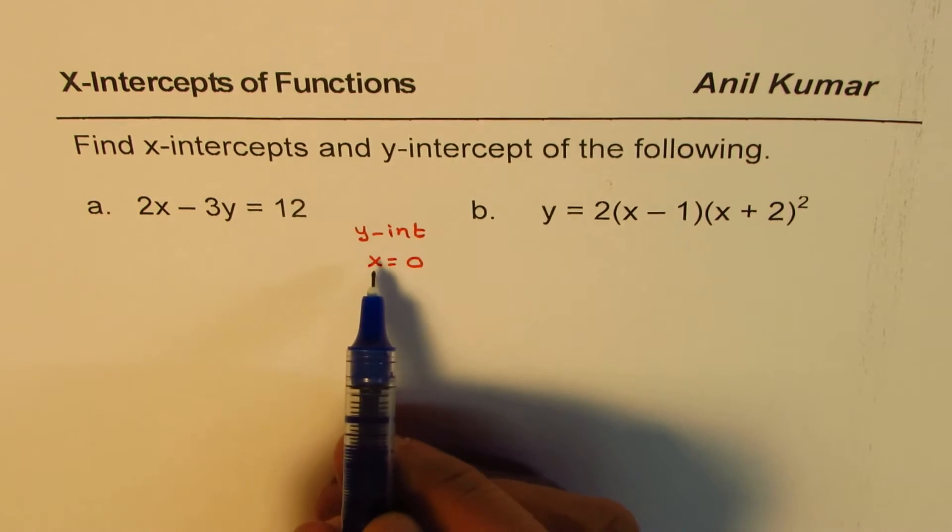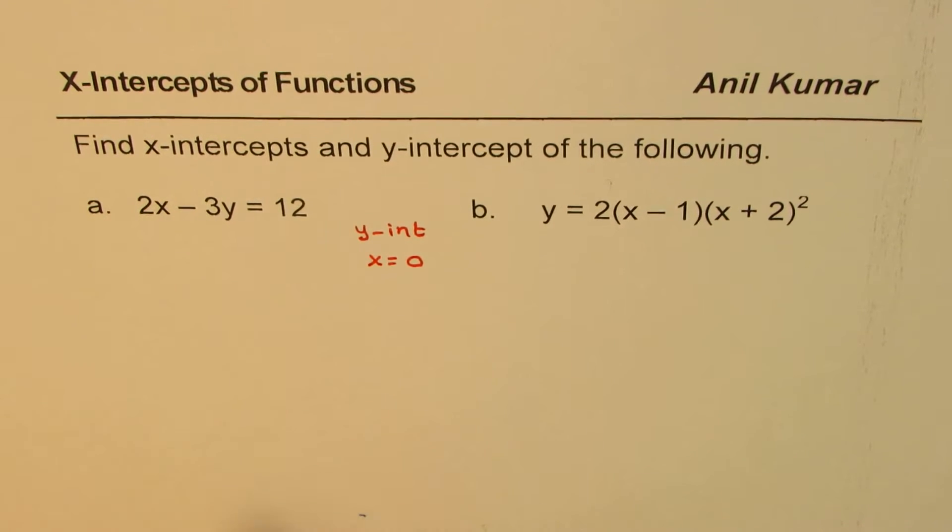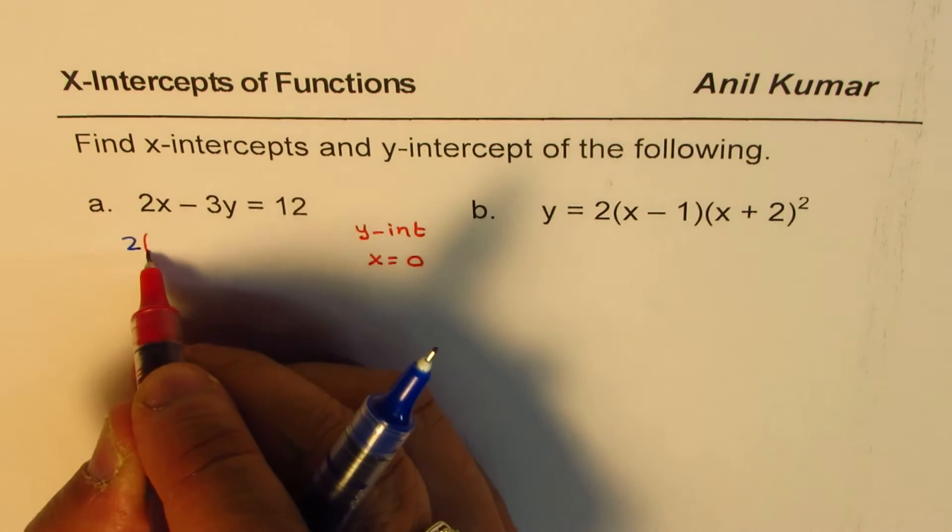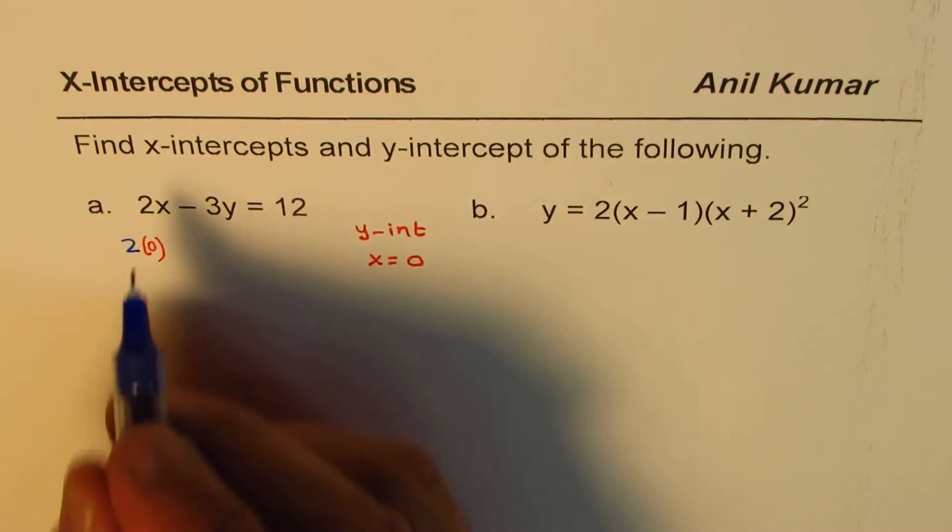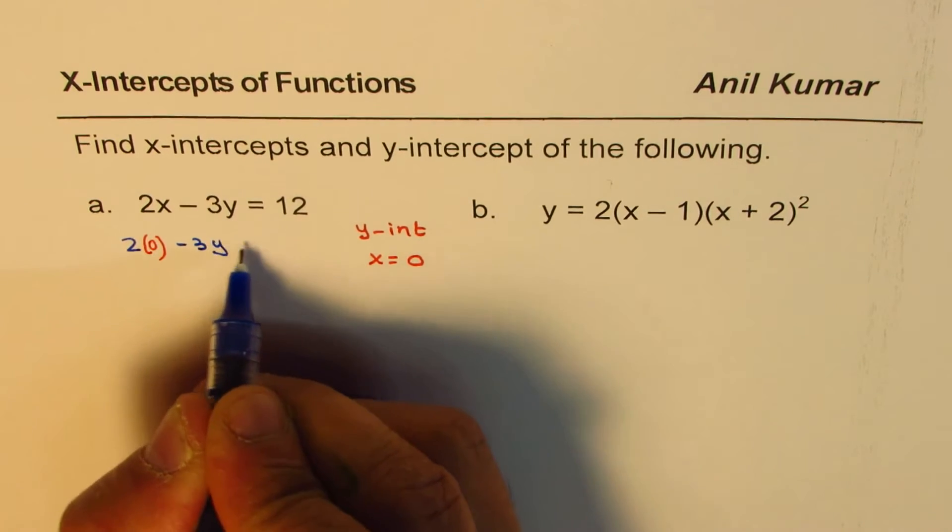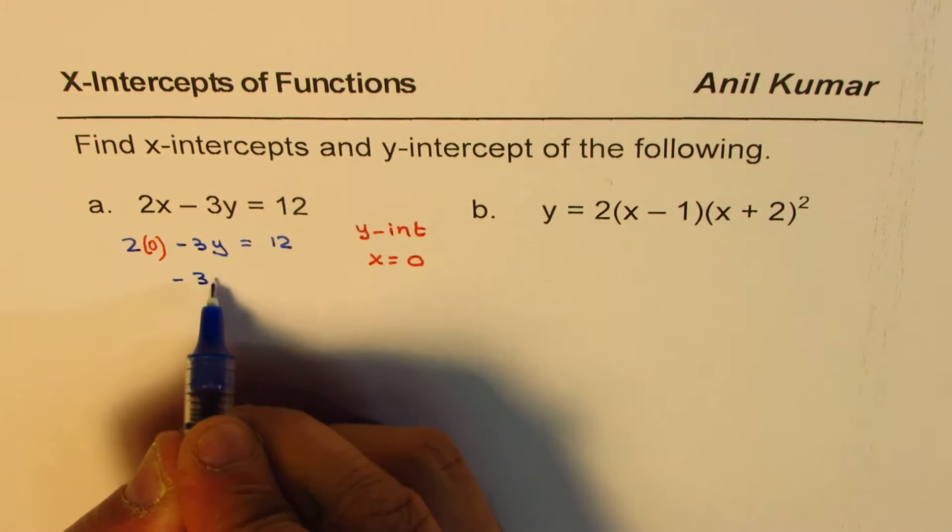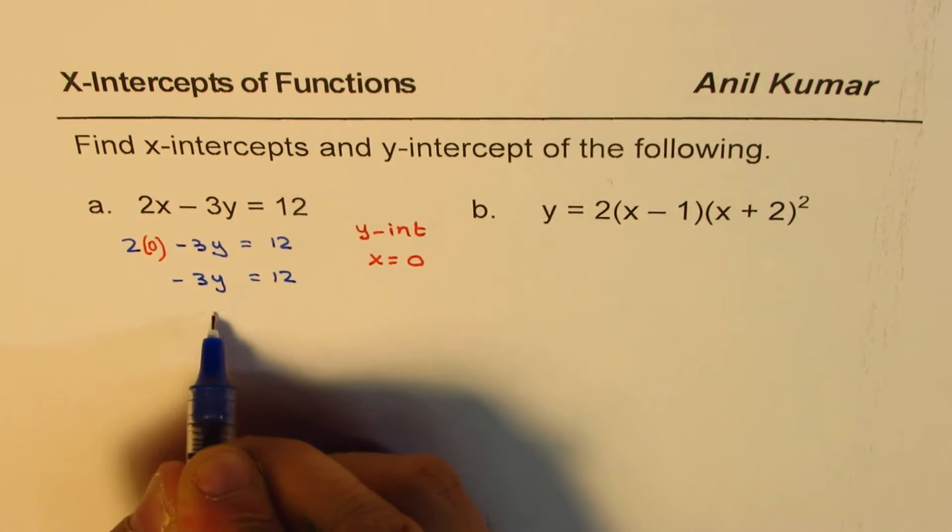To find y-intercept, substitute 0 for x. So we'll write 2 times, within brackets, 0, minus 3y equals 12. Now that is 0, right? So we have minus 3y equals 12.